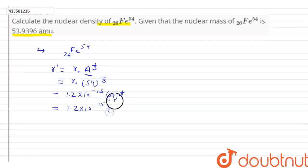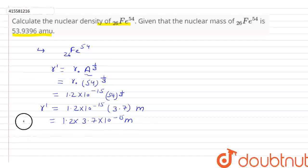54^(1/3) equals 3.7. So the radius of the nucleus will be 1.2 × 3.7 × 10^(-15) meters. This is the nucleus ki radius.